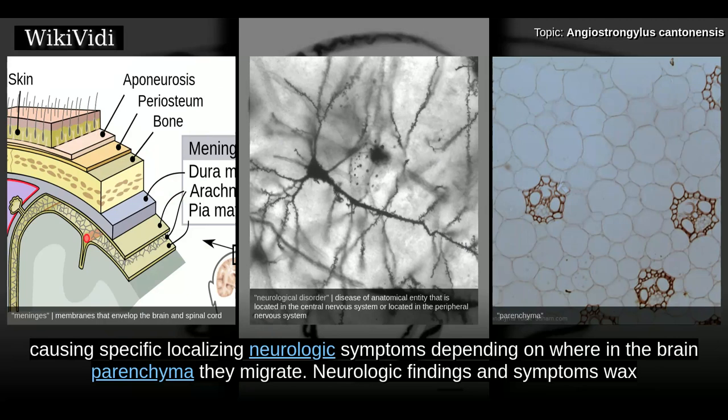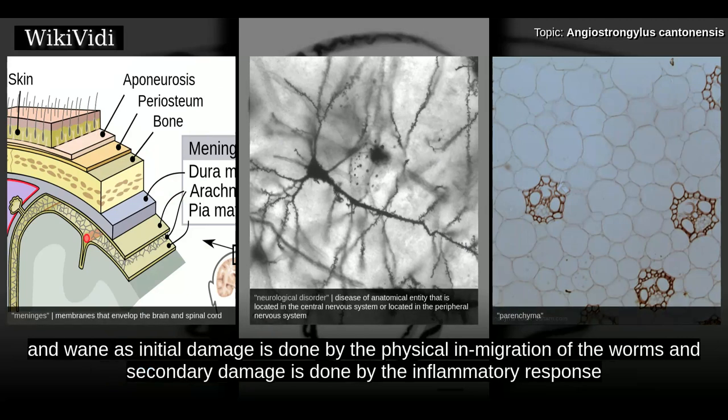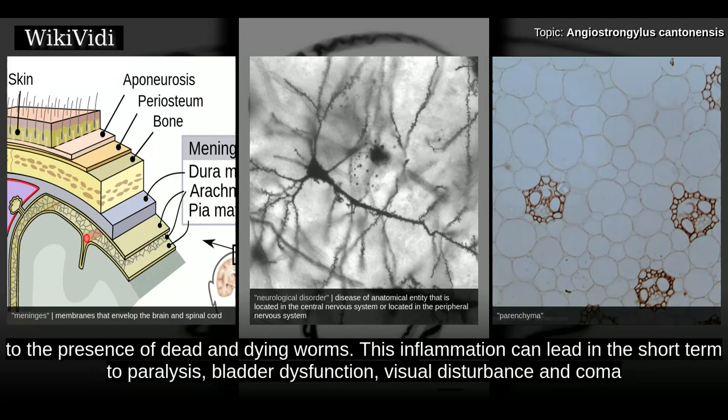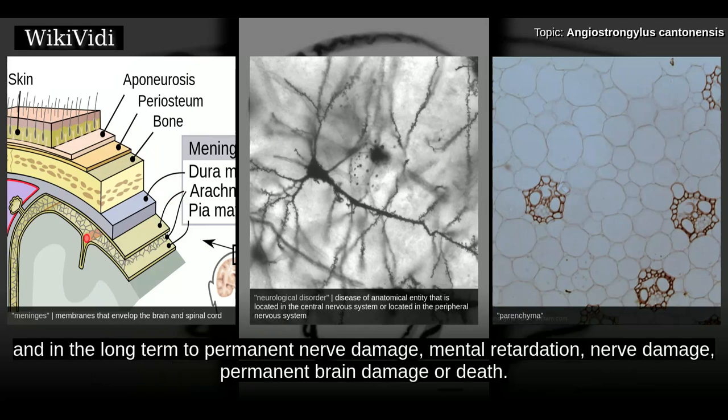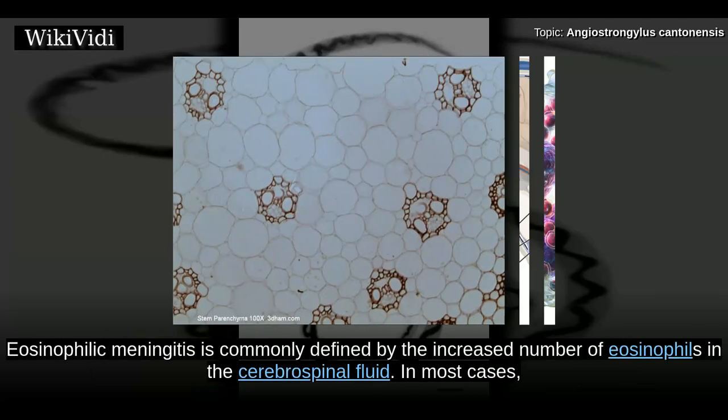Neurologic findings and symptoms wax and wane as initial damage is done by the physical in-migration of the worms, and secondary damage is done by the inflammatory response to the presence of dead and dying worms. This inflammation can lead in the short term to paralysis, bladder dysfunction, visual disturbance, and coma, and in the long term to permanent nerve damage, mental retardation, and permanent brain damage or death.